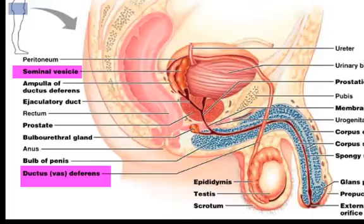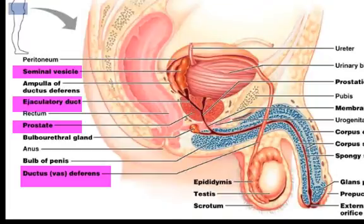From there, the vas deferens turns into the ejaculatory duct as it passes through the prostate gland. The prostate gland circles the entire urethra just inferior to the bladder. It secretes a milky, slightly acidic fluid containing citrate, enzymes, and prostate-specific antigen, which enters the prostatic urethra during ejaculation and helps activate the sperm.